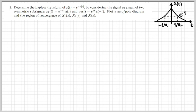Let's move on to another exercise. In this case I'm given a signal x(t) equal to e to the minus a times the absolute value of t. I have represented this signal at the top right. You can conveniently interpret it as the sum of two sub-signals: one for negative times, which is a growing exponential, and one for positive times, which is a decaying exponential. I want to determine the Laplace transform.